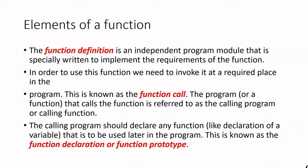To use the function, we need to invoke it at the required place in the program. Whenever we need to calculate the sum of two numbers, we call the function at that particular point — that is called the function call. The program that calls the function is called the calling program. The calling program should declare any function that is to be used later in the program, just like we declare variables at first.